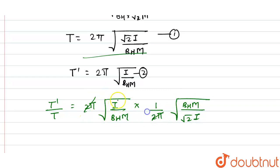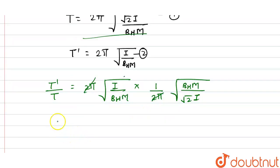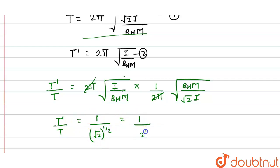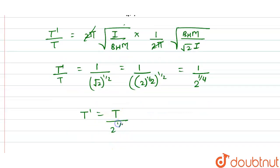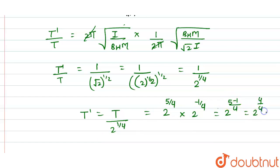After cancellation, T'/T = (1/2)^(1/4), which means T' = T / 2^(1/4). Substituting T = 2^(5/4), we get T' = 2^(5/4) × 2^(-1/4) = 2^(4/4) = 2^1 = 2 seconds.